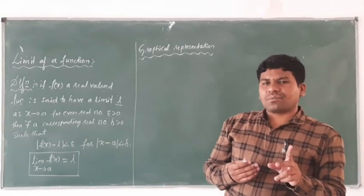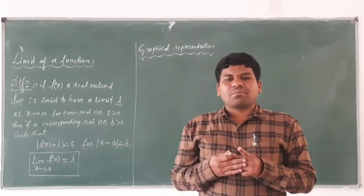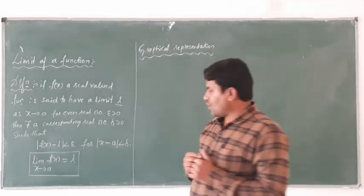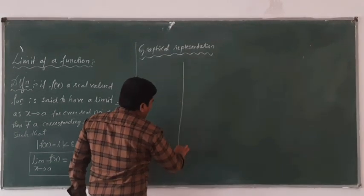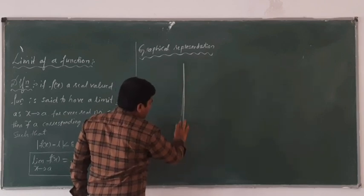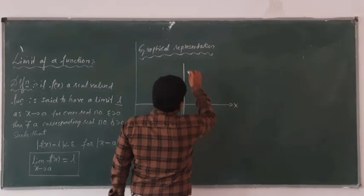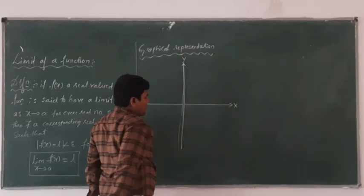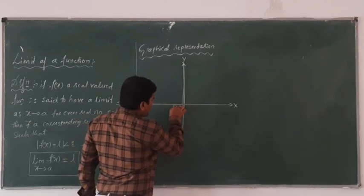In the Cartesian coordinate system, there are two real lines perpendicular to each other — one is the X axis and the other one is the Y axis. This is the origin, (0, 0).